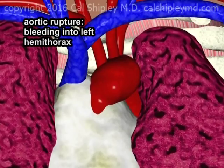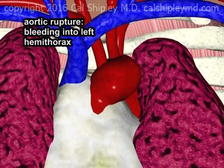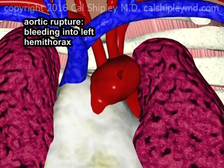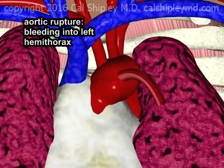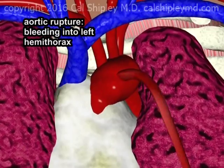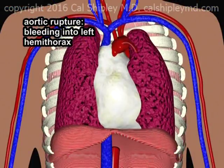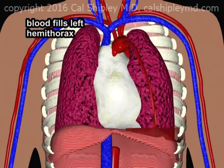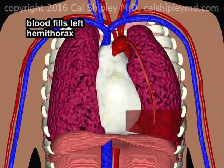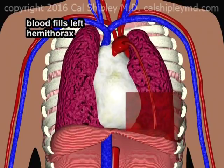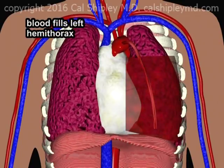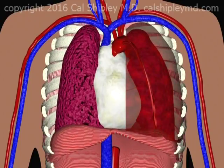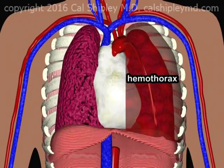When rupture occurs, blood is forced under high pressure into the left chest cavity, also known as the left hemithorax. The blood, hemorrhaging from the rupture, fills the space between the left lung and the chest wall surrounding it. This is hemothorax.